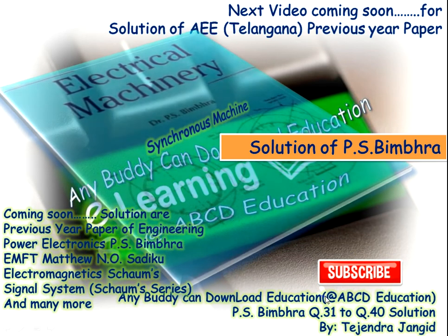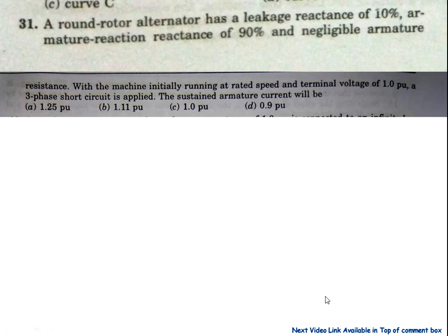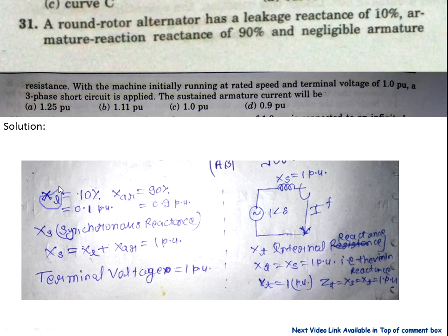A round rotor alternator has a leakage reactance of 10% and armature reaction reactance of 90%, with negligible armature resistance. With the machine initially running at rated speed and terminal voltage, a 3-phase short circuit is applied. The sustained armature current will be — these are the options. Now the leakage reactance plus armature reactance gives a total synchronous reactance of 100%, which is 1 per unit, and terminal voltage is 1 per unit.